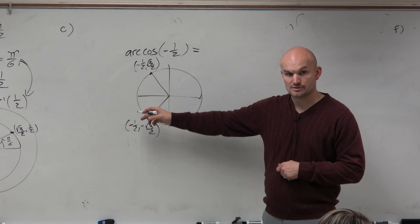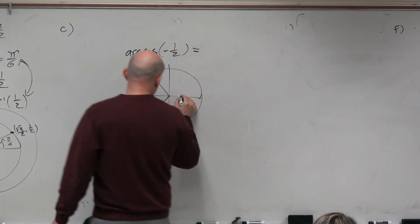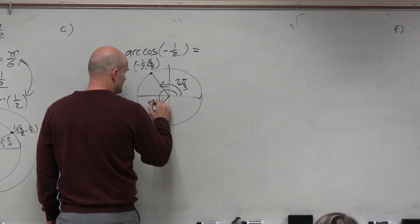Those two points, they're on the unit circle. Now I just got to figure out, well, what angles produce those coordinate points? Well, we had this angle, 2 pi over 3, and this angle, 4 pi over 3.